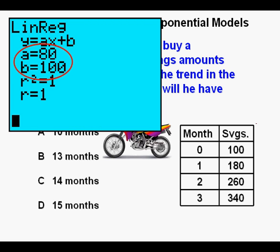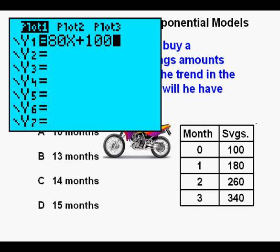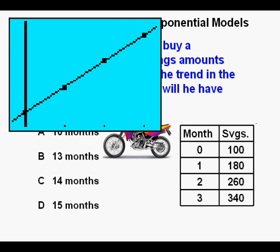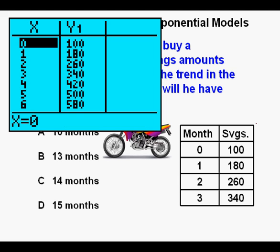We go to the function editor by pressing Y equals and ENTER the function Y equals 80X plus 100. We press GRAPH. We see the line fitting the points very nicely.